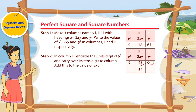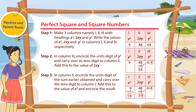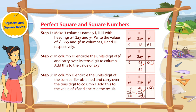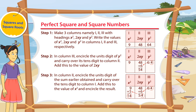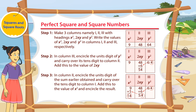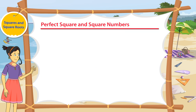Step 2: In column 3, encircle the units digit of y square and carry over its tens digit to column 2. Add this to the value of 2xy. Step 3: In column 2, encircle the units digit of the sum earlier obtained and carry over the tens digit to column 1. Add this to the value of x square and encircle the result. The answer is obtained by writing the encircled numbers starting from column 1.